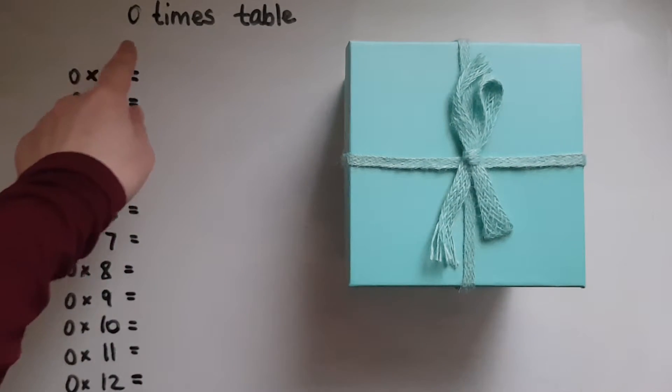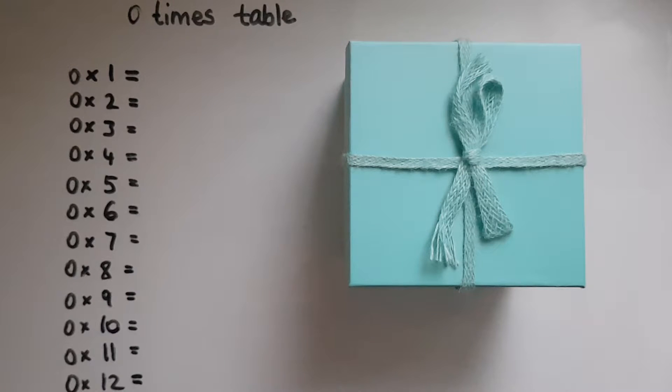The zero times table, as the name suggests, we do something zero times. So we might plan to go to the shop and get five items, eight items, but we're not really going to the shop. So it's zero times that we do it.